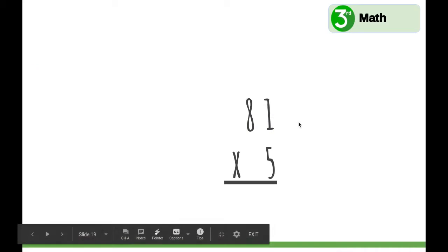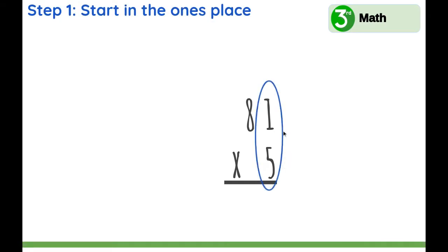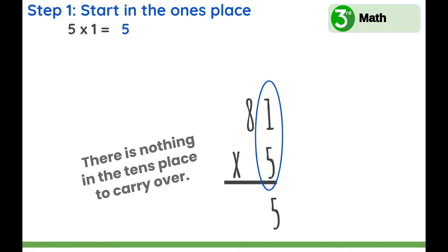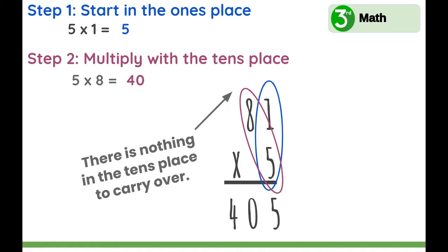Next, it says 81 times 5. The ones place is lined up — let's start there. 5 times 1. What is 5 times 1? 5, yes. So we'll write that in the ones place. There is nothing in the tens place to carry over. So we can go ahead and multiply 5 times 8. What is 5 times 8? 40, yes. So we'll write 40. 81 times 5 equals 405.